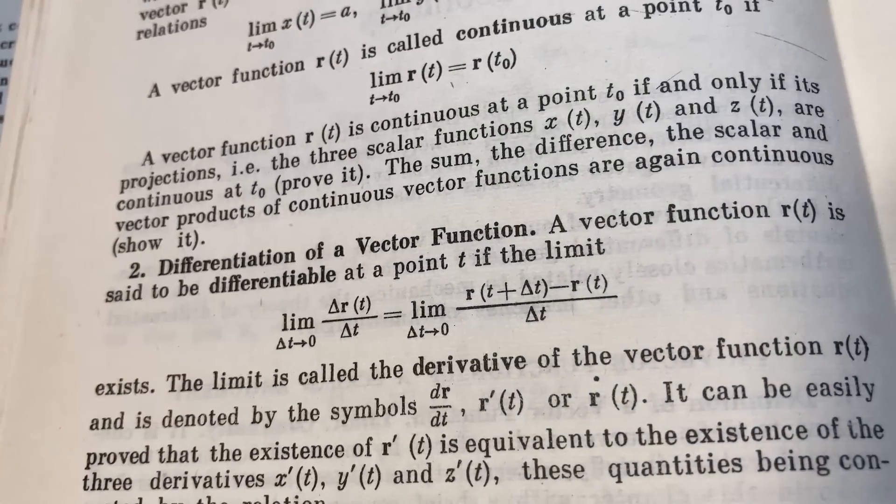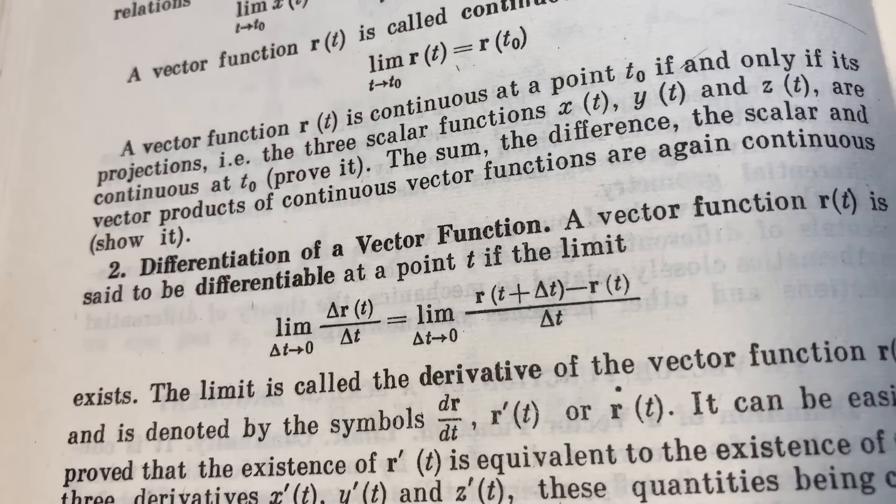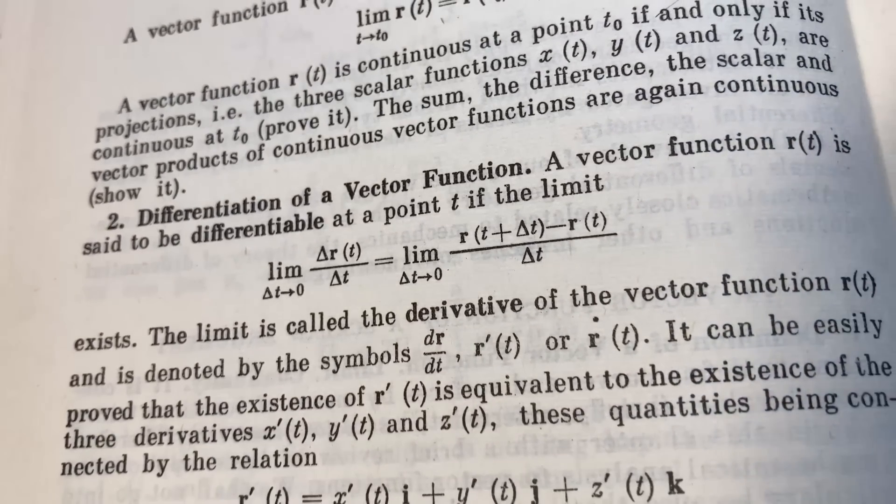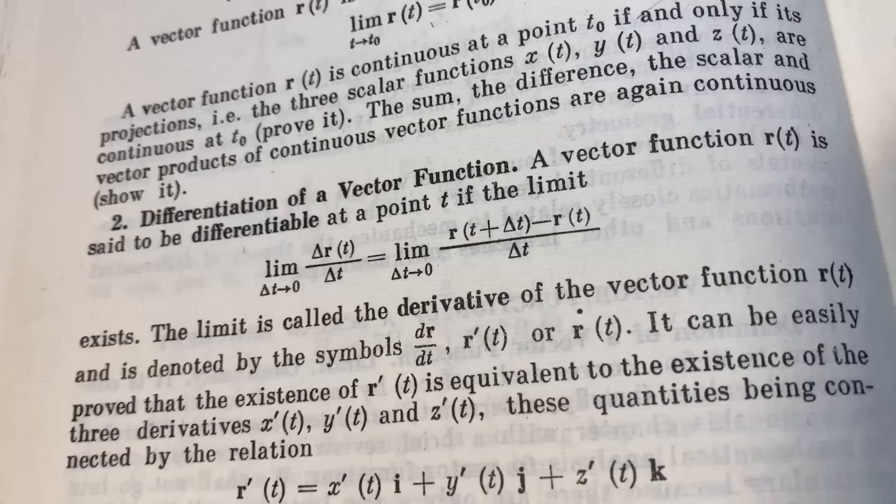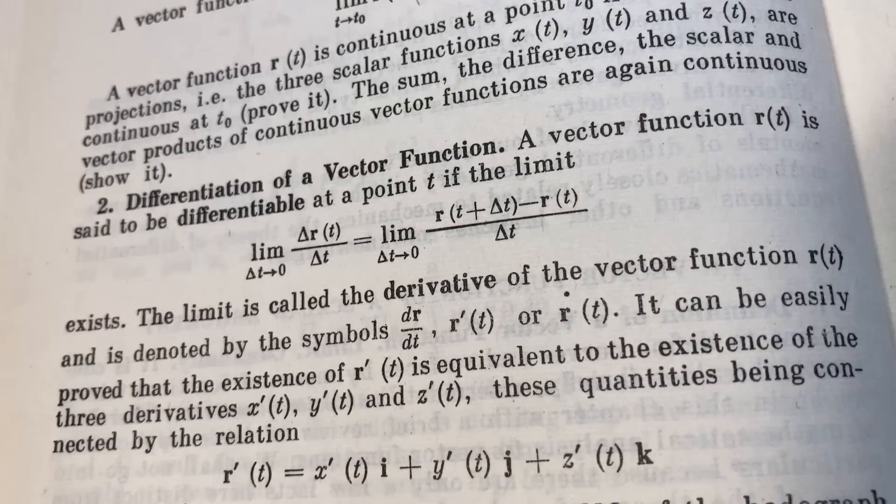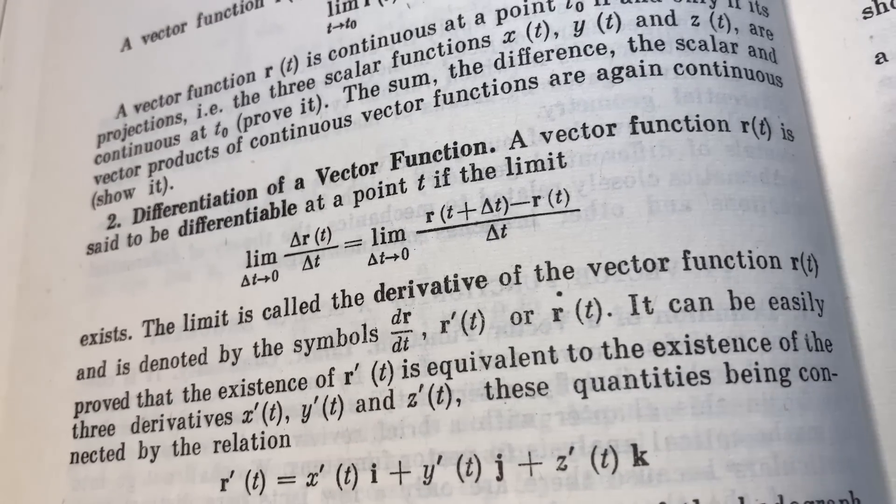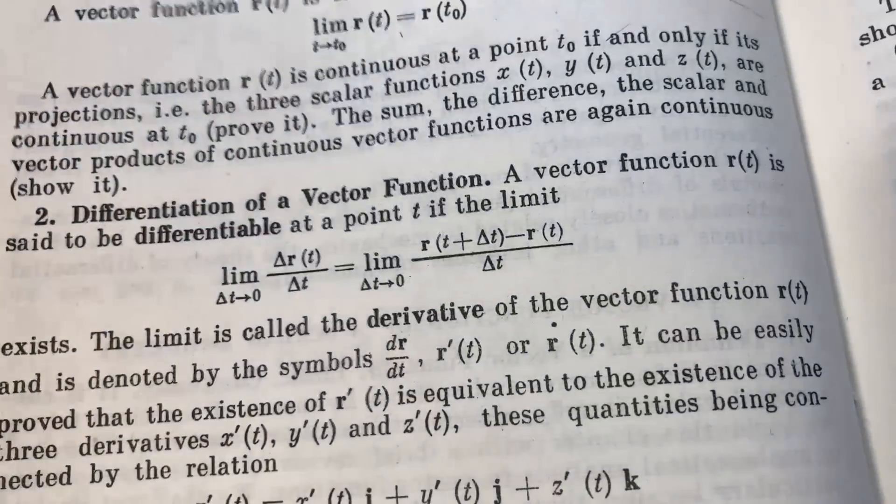And the book discusses that here in this chapter. Differentiation of a vector function. A vector function, r(t), is said to be differentiable at a point t if this limit here exists. The limit is called the derivative of the vector function, r(t), and is denoted by, and they give you various notations. You can see that this definition readily agrees with other similar definitions. For example, the derivative of a single variable function is very similar to this one.